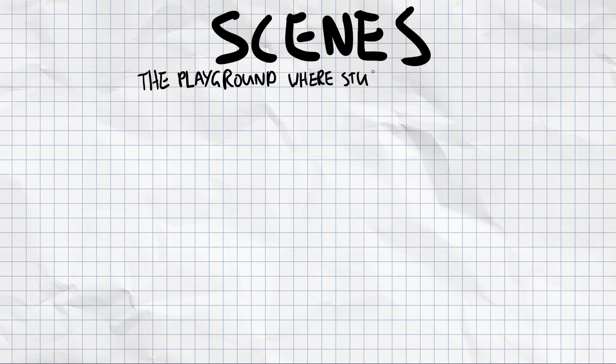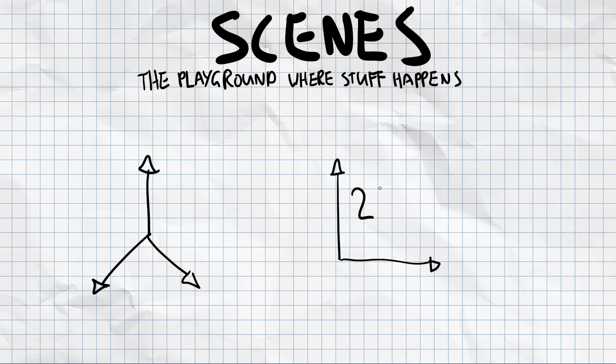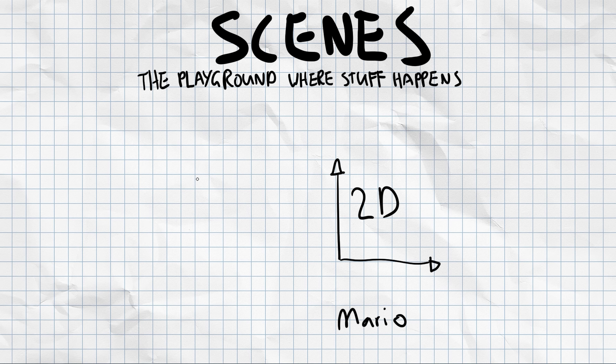So starting off of scenes, like I mentioned before, this is the playground. This is the actual world in which everything happens. So the scene can be 3D, it can be 2D, so like Call of Duty, for example, or a game like Mario. They're both games and they both share tons of similarities, but they're both sort of made in two different ways.